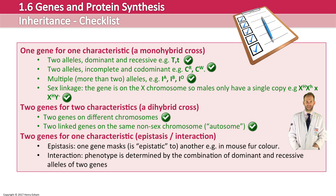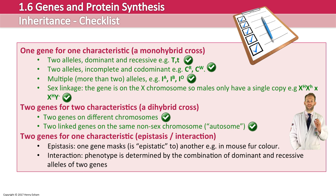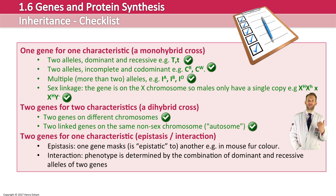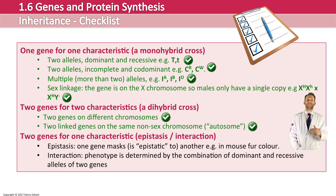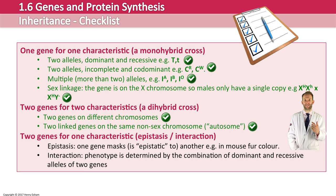Almost at the end of this section on inheritance, there is also when you look at two genes for one characteristic. So this is where two genes are coding for just one characteristic, not two characteristics — not like we saw with the dihybrid cross where you're looking at seed colour and pollen shape. This is just one characteristic, but it is coded for by two genes.